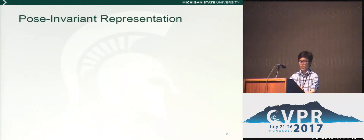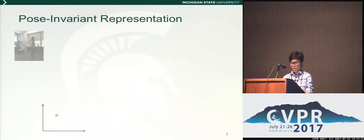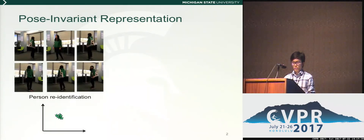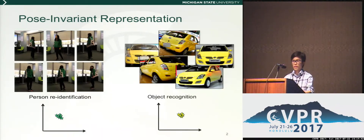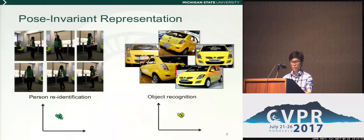Pose-variance is a challenge in object recognition, therefore pose-invariant representation is very important for person re-identification. The same thing applies for generic object recognition like cars. In this work, we will focus on pose-invariant face recognition, but the idea is applicable for generic object recognition.